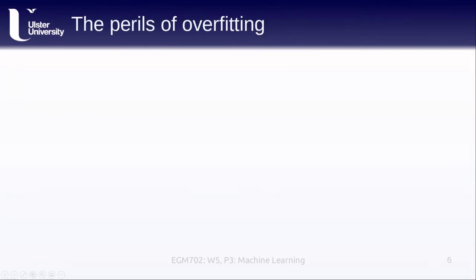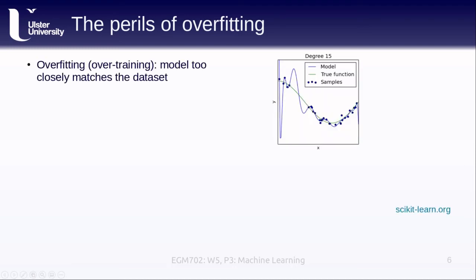One other concept that we need to talk about is what is known as over or underfitting a model. Overfitting or in machine learning often referred to as overtraining, our model too closely matches the data set that we're using.